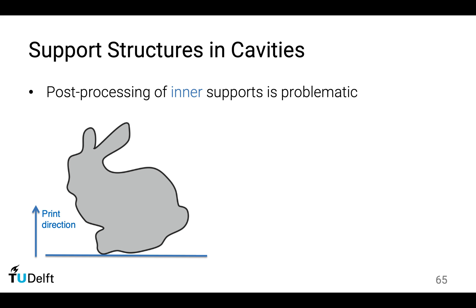We distinguish two types of support structures. Suppose we want to fabricate a 2D bunny model. The first type is support that is outside of the model — it is a waste of material, but it could be removed in principle. The second type is when we have a cavity inside; this cavity is not self-supporting, so it also needs support.